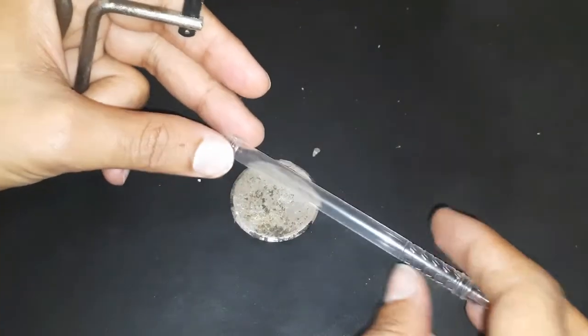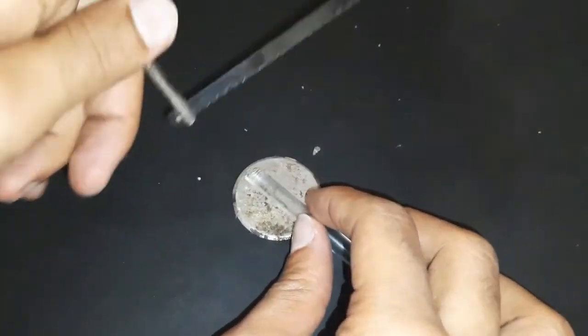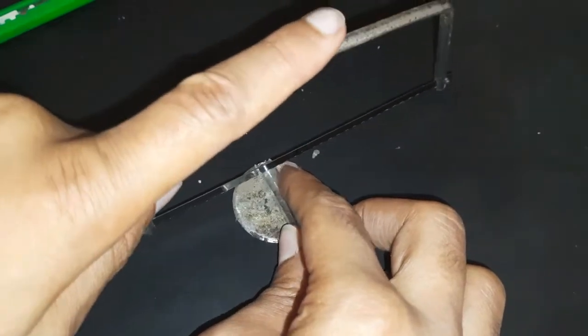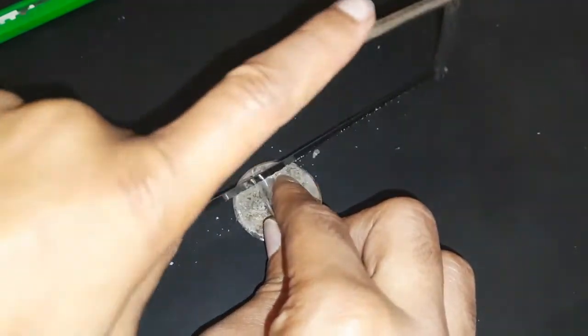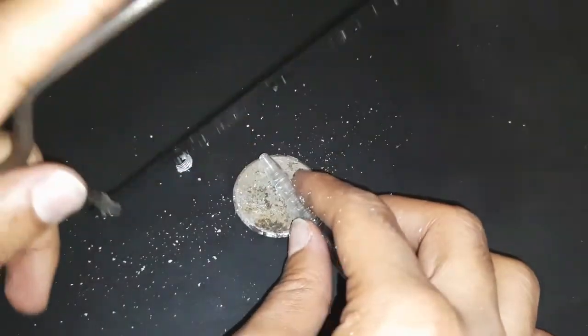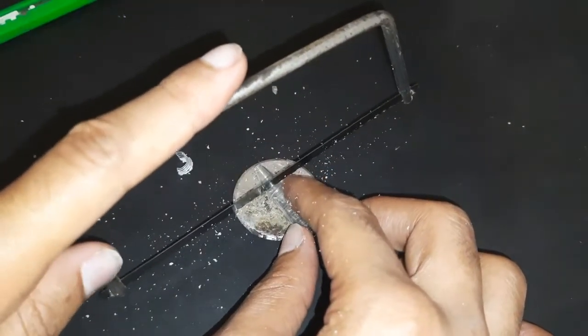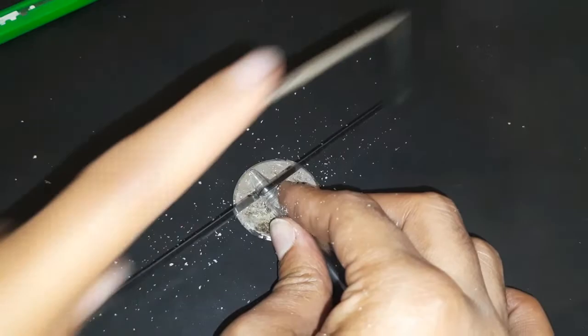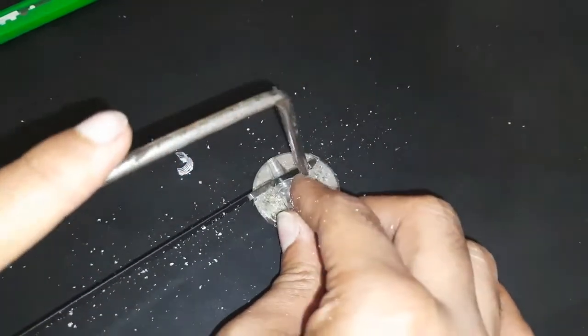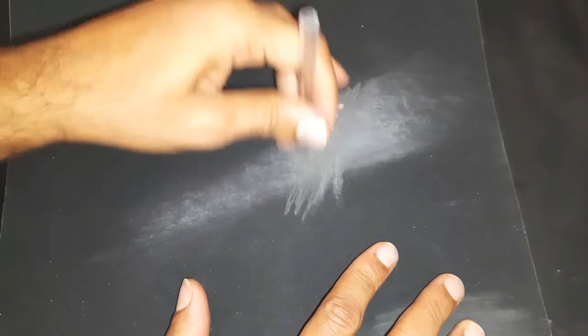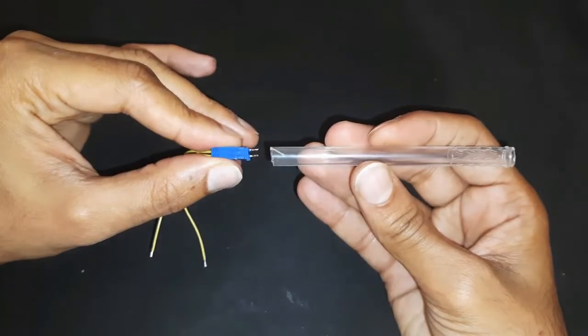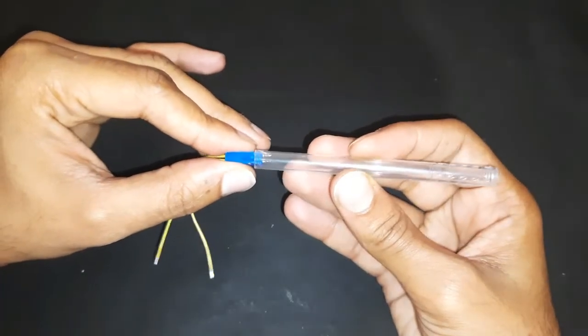So to make a mercury tilt switch or the gyro sensor, I have taken a case of pen. It's transparent so that we can see the mercury moving inside. After removing the edges, I will put the pins inside.